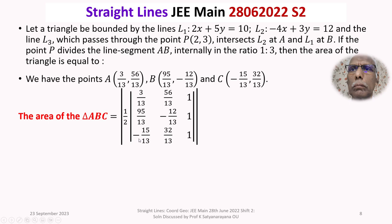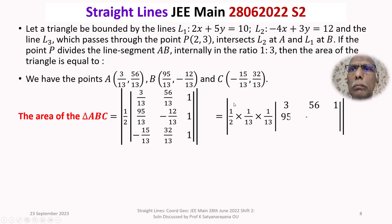The area of triangle ABC equals the absolute value of one-half times the determinant with rows (x1, y1, 1), (x2, y2, 1), (x3, y3, 1). Substituting the vertices: row 1 is (3/13, 56/13, 1), row 2 is (95/13, minus 12/13, 1), row 3 is (minus 15/13, 32/13, 1). Taking 1/13 common from the first column and 1/13 from the second column, the determinant becomes (1/2) times (1/13) times (1/13) times the determinant of (3, 56, 1), (95, minus 12, 1), (minus 15, 32, 1).